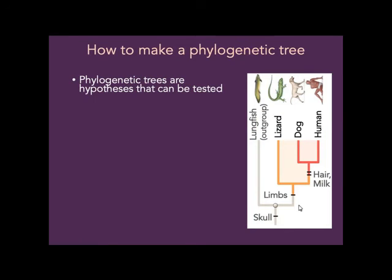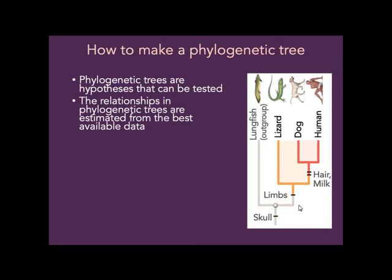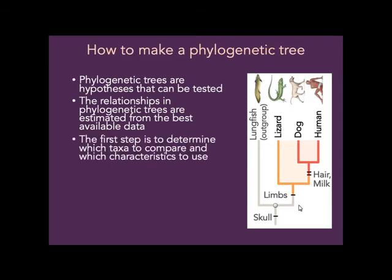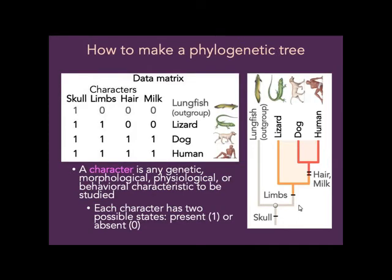A phylogenetic tree is a hypothesis that we can test. We estimate the relationships using the best available data. If you're trying to make a phylogenetic tree, first figure out which taxa you're comparing and which characteristics you're using. A character refers to any genetic, morphological, physiological, or behavioral characteristic to be studied — it could be a DNA sequence, a morphological trait, a metabolic pathway, or even a behavioral characteristic.